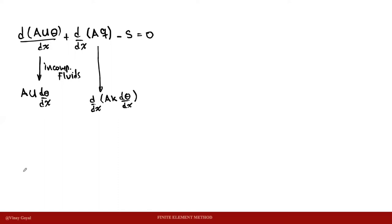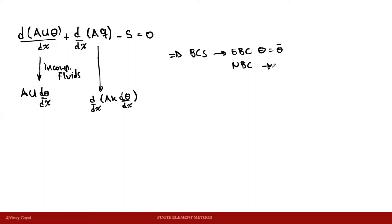In this problem, two boundary conditions are identified. The essential boundary condition is related with the primary variable data, and the natural boundary condition is related with the diffusion term, which is minus k·(dθ/dx), and we can say this is equal to q bar.